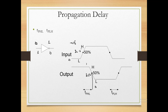Similarly, for TPLH (low-to-high output propagation delay): when input goes from +5V toward 0, and output goes from 0 toward +5V (inverter), the time from when the input reaches 2.5V to when the output reaches 2.5V is the propagation delay for logic low transition. Both TPHL and TPLH represent propagation delays for different transitions.